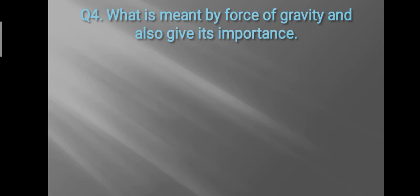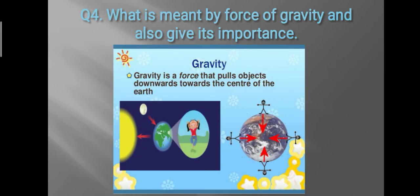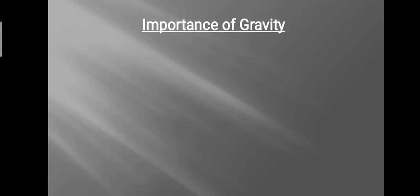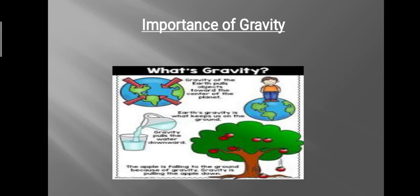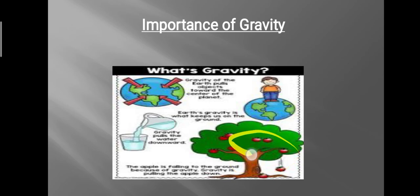Question five: what is meant by the force of gravity and how is it important to us? Gravity is a force that pulls objects toward the center of the earth. The earth's gravity keeps us standing on the ground, pulls water downward, and helps fruits and objects fall back to the ground. This is the importance of gravity.